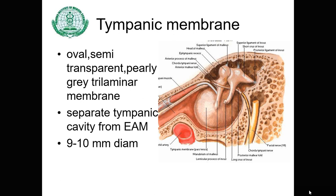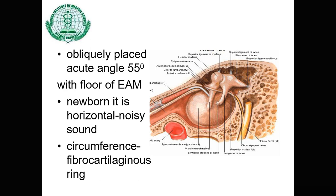The tympanic membrane, also known as the eardrum, is an oval, semi-transparent, partly gray trilaminar membrane which separates the tympanic cavity from the external acoustic meatus. It is around 9 to 10 millimeters in diameter and is obliquely placed at an acute angle of around 55 degrees with the floor of the external acoustic meatus. In newborns it is almost horizontal, so the newborn can withstand louder sounds better than an adult. Its circumference is made up of a fibrocartilaginous rim attached to the sulcus of the tympanic plate at the bottom of the external acoustic meatus.